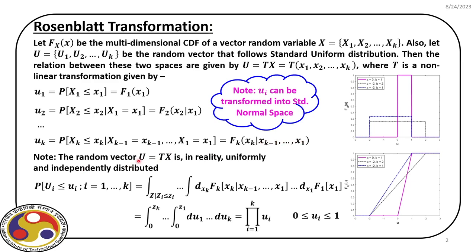The random vector U, related to the original space by U equal to T(X), is in reality uniformly and independently distributed. The distribution of uniform random variables has a constant PDF value within the domain. Following the pink line between 0 and 1, it has a constant value, and the area under this curve is also 1.